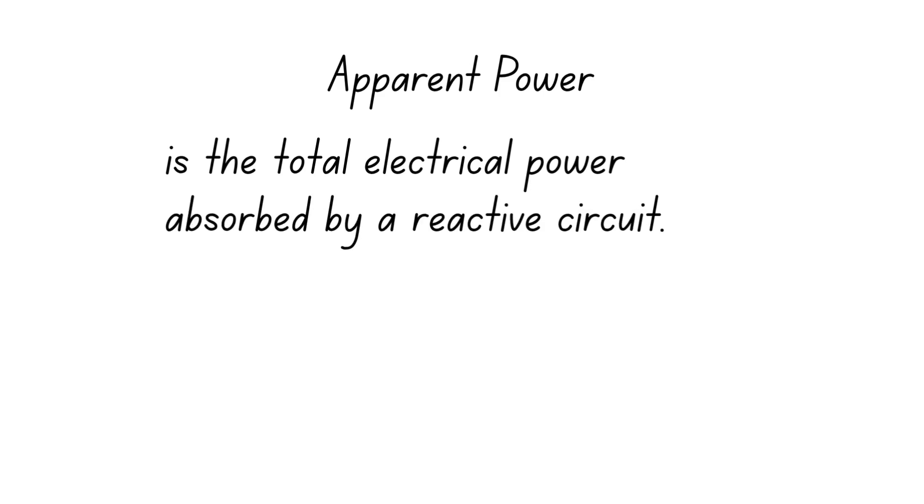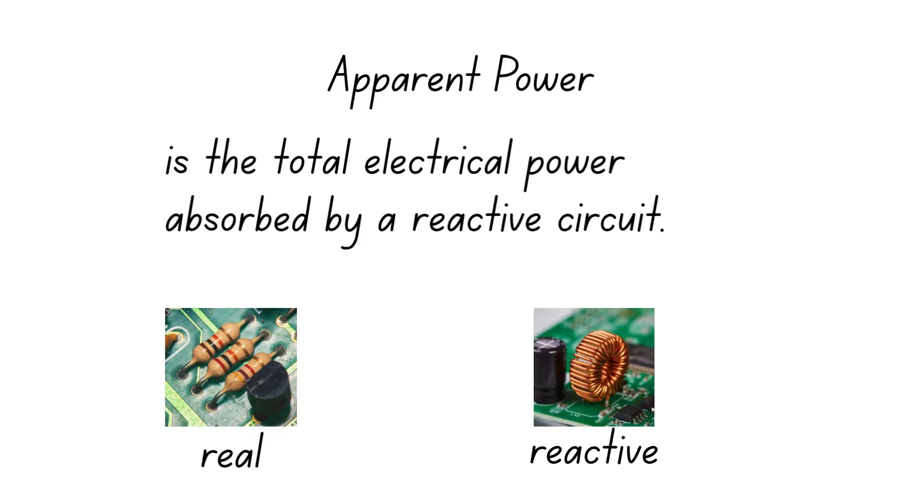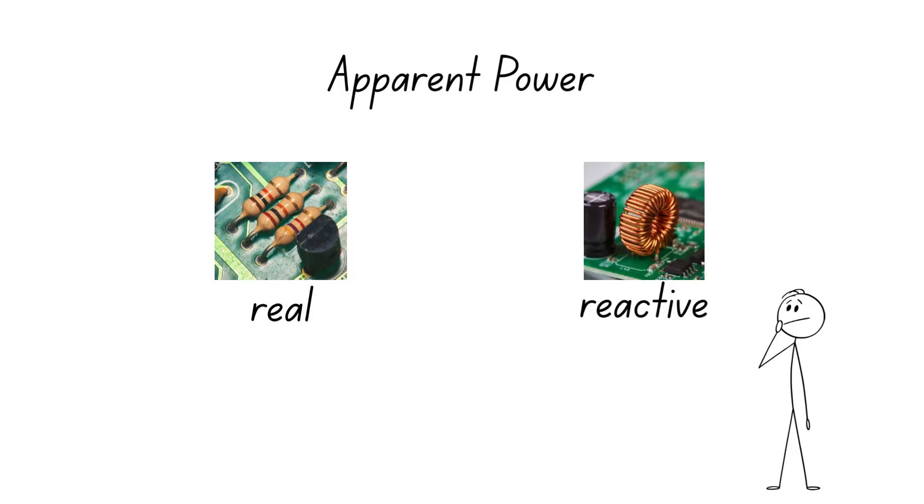Apparent power is the total electrical power absorbed by a reactive circuit. It is a combination of both the real and reactive powers. Apparent power is also measured in volt amps, because it indicates more than just the power lost as heat. Again, when adding real power and reactive power to obtain the apparent power, make sure to consider the phase shifts as well, otherwise you obtain a sum that is greater than the actual apparent power.